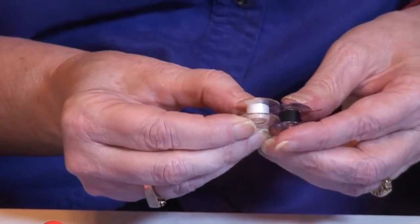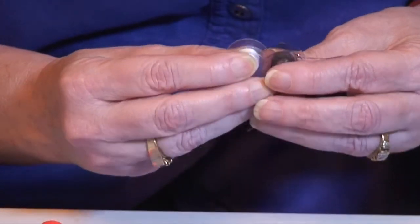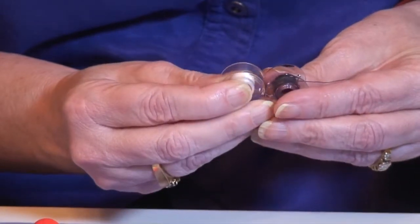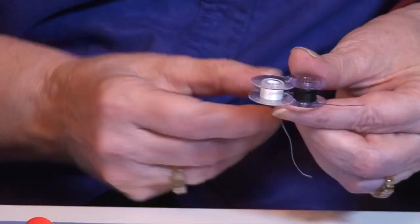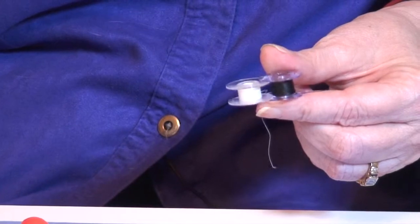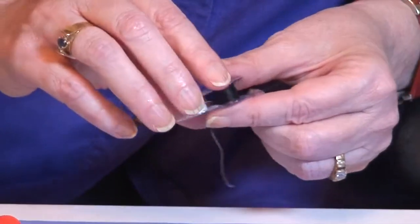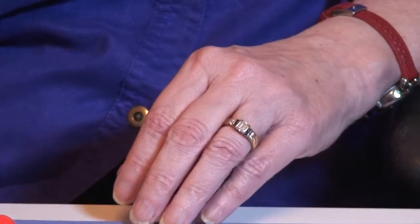So the size L will actually fit right inside a class 15 bobbin. You can see that it's actually shorter. You want to make sure you use the right size bobbins because bobbins are critical for proper stitch.